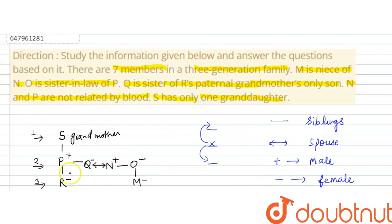O is sister-in-law of P. Q is sister of R's paternal grandmother's only son.